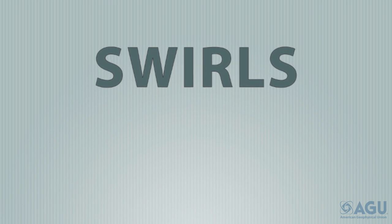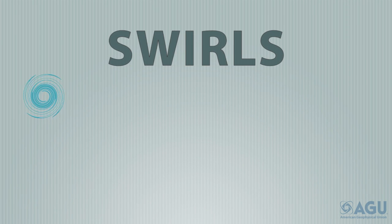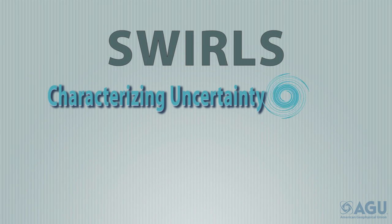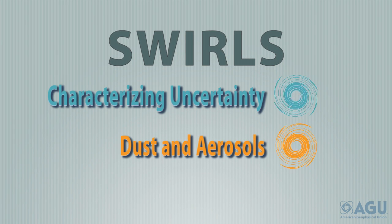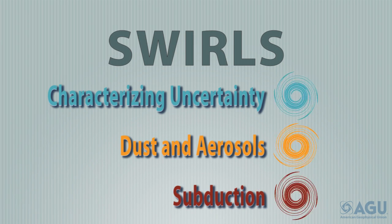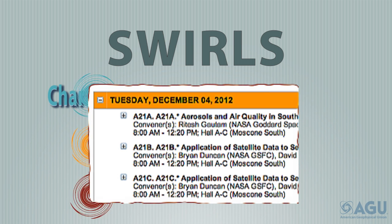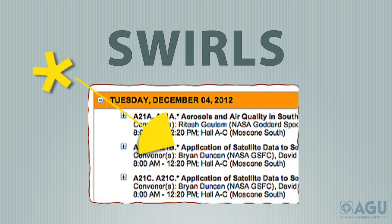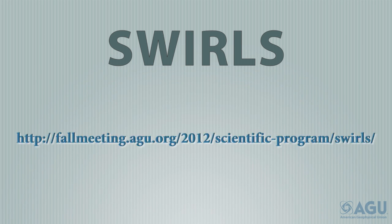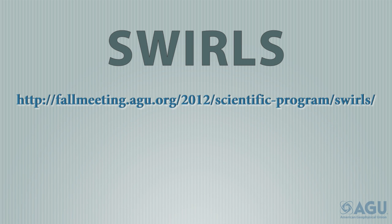For 2012, the AGU program committee identified three swirl themes: characterizing uncertainty, dust and aerosols, and subduction. Sessions included in the swirls are marked with an asterisk in the scientific program. A full list of the sessions included in each swirl can also be found here. In the program book, swirls will be marked using the graphics below.